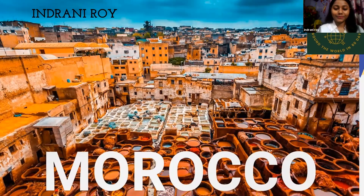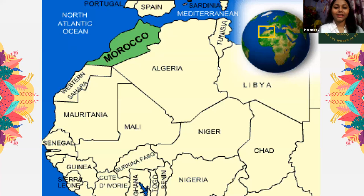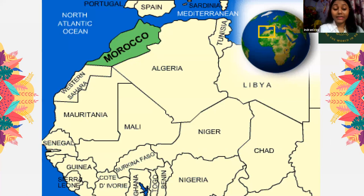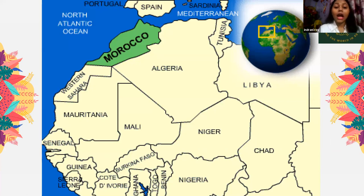Morocco. Next slide. Here you can see the map of Morocco. The neighboring countries include Western Sahara, which is now occupied by Morocco, Mauritania, Mali, Algeria, Niger, and others. The coastline is on the Atlantic Ocean and Mediterranean Sea.